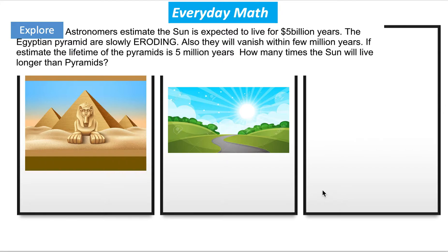One of them is this example here, this case, study case, or how to call it. Explore. Astronomers estimate that the Sun is expected to live for 5 billion years. The Egyptian pyramids are slowly eroding, will vanish within a few million years. If we estimate the lifetime of the pyramids is 5 million years, how many times will the Sun live longer than pyramids?